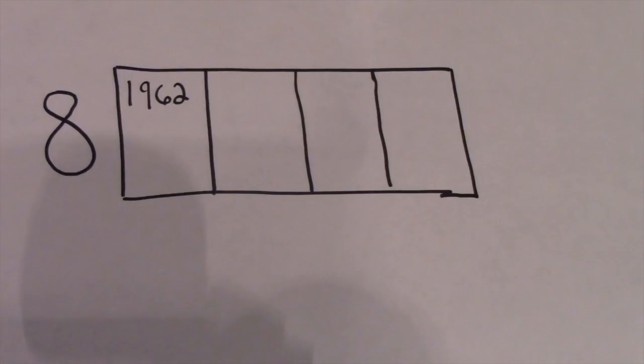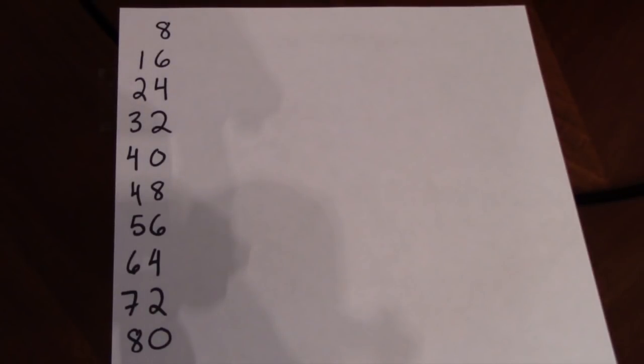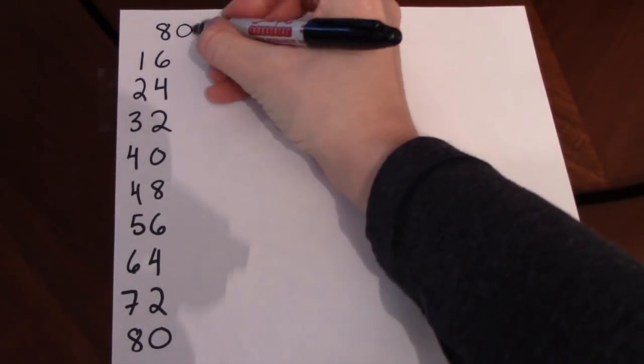Our job is to figure out how many times we can shove 8 into 1,962. We need our handy dandy multiples of 8 to make this process as smooth as possible. We are starting in the thousands place. Therefore, we need to turn these multiples of 8 into multiples of 8,000.